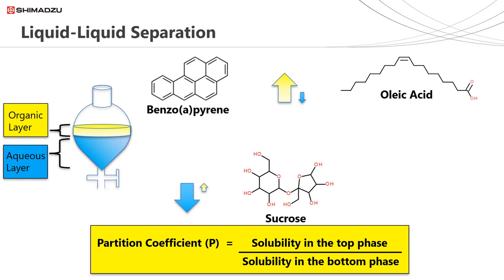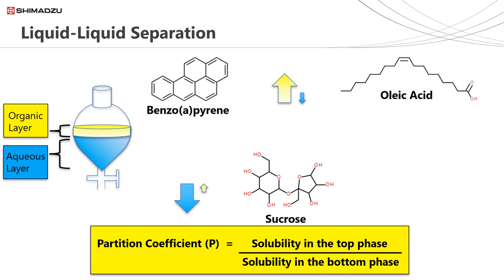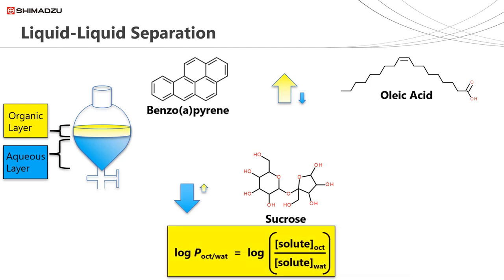The partition coefficient P is equal to the solubility of a compound in the organic layer divided by the solubility of a compound in the aqueous layer. If the organic and aqueous layers are octanol and water respectively, then the log P of a compound is equal to the log of the concentration of solute in octanol divided by the concentration of the solute in water. A log P figure greater than two would suggest a fatty hydrophobic compound, whereas a number close to zero or negative would suggest a polar hydrophilic compound.